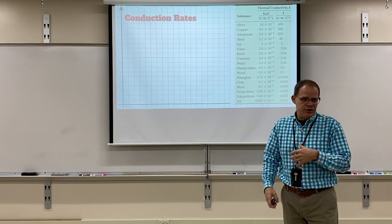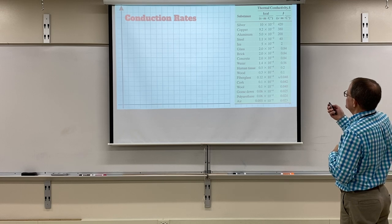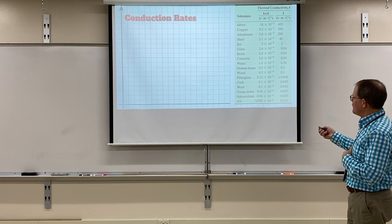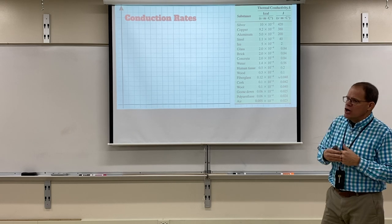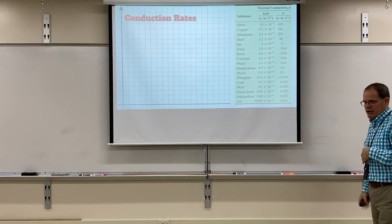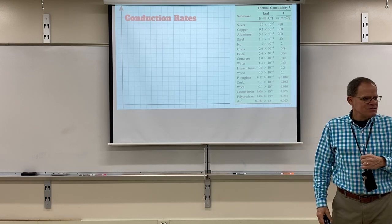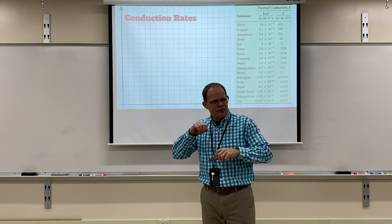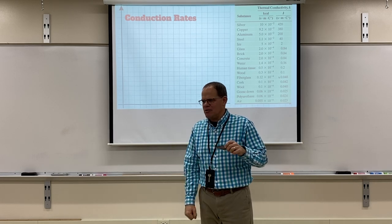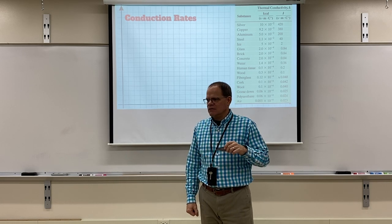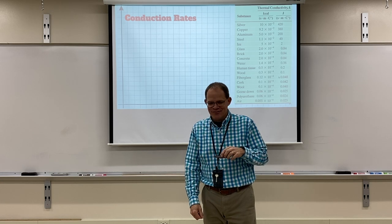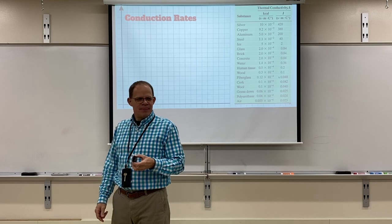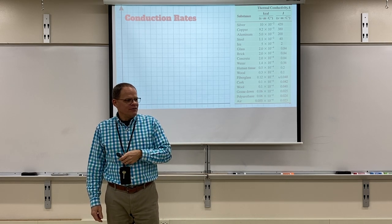We can measure conduction rates: take a square of material, heat one end, keep the other cold, and measure the rate of energy transfer. The units are watts per meter per degree Celsius. A big number means it's a great conductor of energy; a small number means it's a poor conductor. The best conductor of energy is silver. If you wanted to conduct heat from the burner to your frying pan — say, to make a fried egg — the best material would be silver. But why don't we have silver pans?